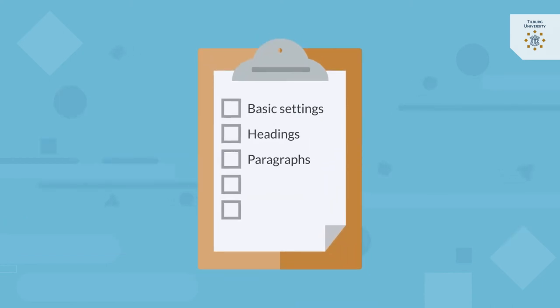So, the basic formatting according to APA includes the basic settings and proper use of headings and paragraphs. Additionally, you may want to add a running head to your paper as well as a title page.